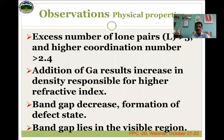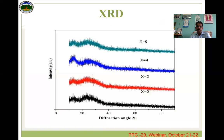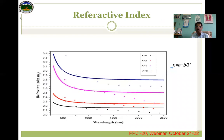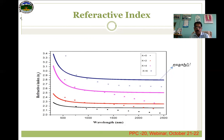When we add gallium, gallium increases the density, and when density increases it alters the refractive index — it is expected to be higher. This is the XRD of the thin films. The refractive index calculated using the Swanepoel method is presented here. The scattered data is our result and the solid lines represent the Cauchy dispersion relation — our data fits well with the Cauchy dispersion relation. We find that across the whole wavelength range and for all concentrations the refractive index is greater than 2, and as we increase the gallium concentration the refractive index increases.